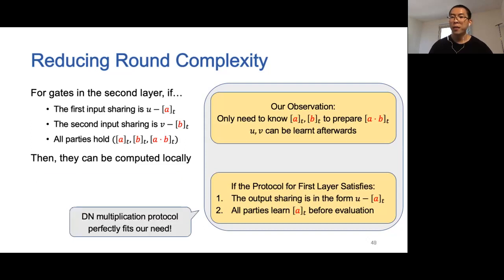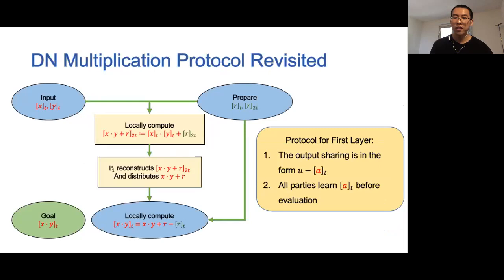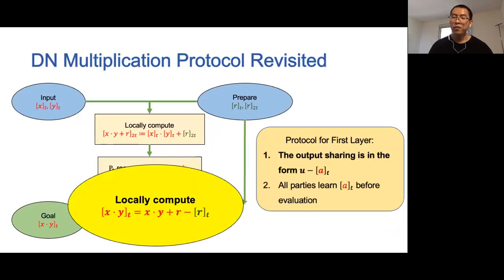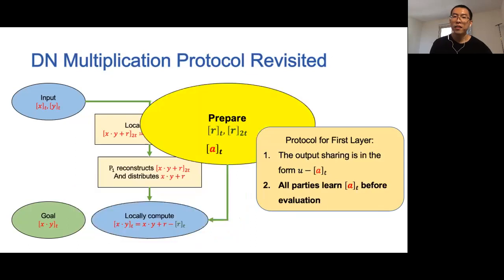Fortunately, the original DM multiplication protocol perfectly fits our need. Recall the whole process of the DM multiplication protocol. First, note that the output sharing is in the form of a constant minus a sharing. Specifically, here x times y plus r serves as the constant value u, and the sharing [r] serves as the role of the sharing a. Thus, the first property is satisfied. For the second property, the sharing [r] is part of the double sharing used in the protocol, and this pair of double sharings is prepared before running the protocol. Therefore, all parties learn the sharing [r], which serves as the sharing a, before evaluation.